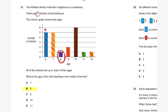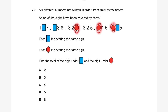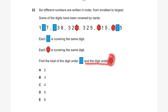Question twenty-two. Six different numbers are written in order from smallest to largest. Each blue rectangle covers the same digit, and each red hexagon covers the same digit. We need to find the total of the digit under the blue rectangle and the digit under the red hexagon. Since numbers are ordered smallest to largest, the center numbers are 3, 2, something and 3, 2, 5 — so the red digit must be smaller than five. Looking at the outer numbers with one, something, seven and something, three, eight.